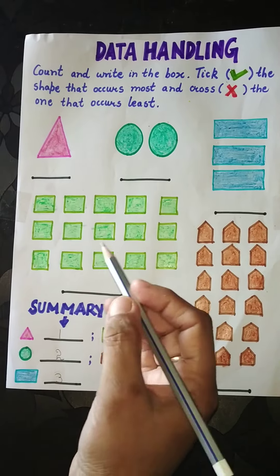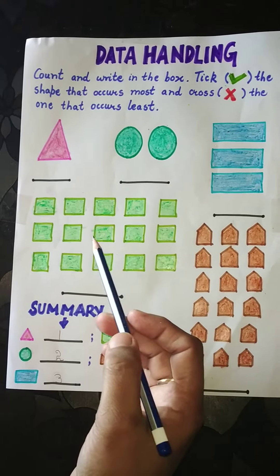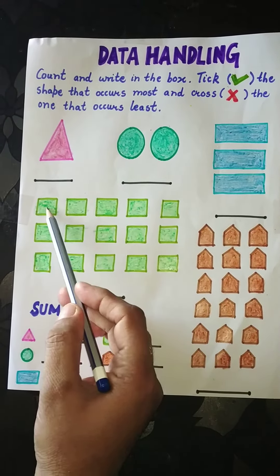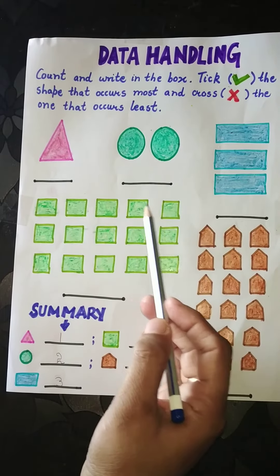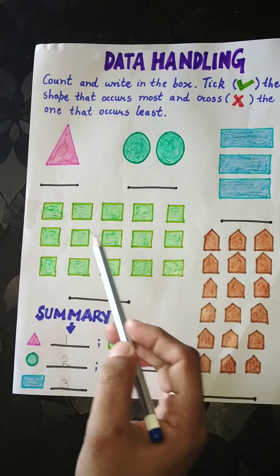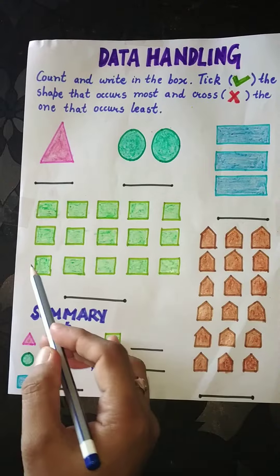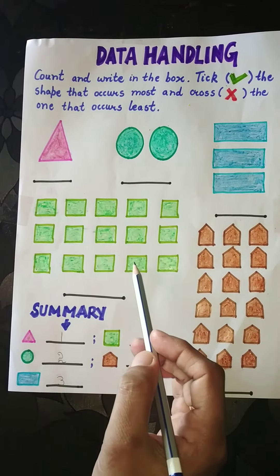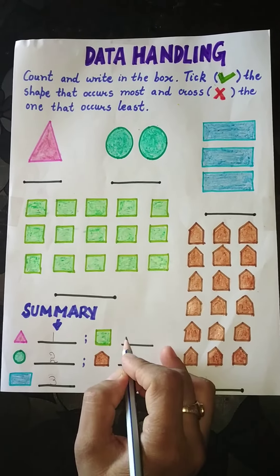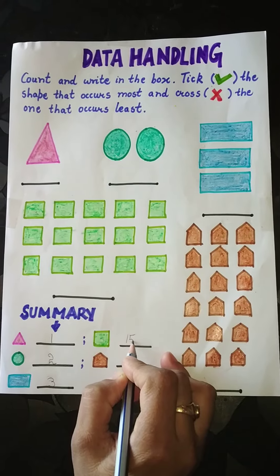Children, now we have to count the number of squares. One, two, three, four, five, six, seven, eight, nine, ten, eleven, twelve, thirteen, fourteen, fifteen. Here children, 15 squares are present.